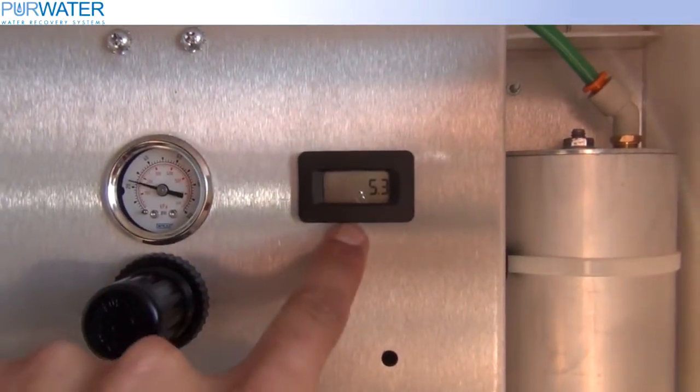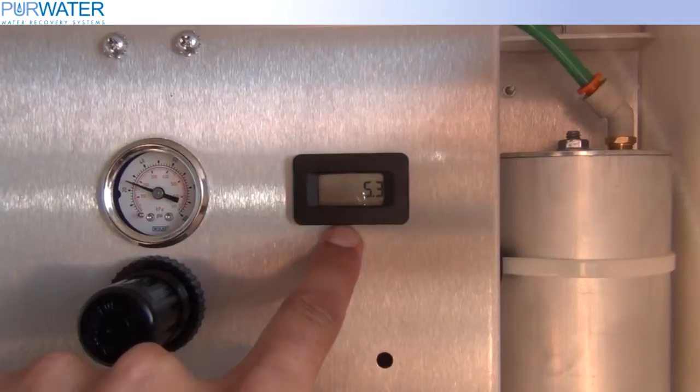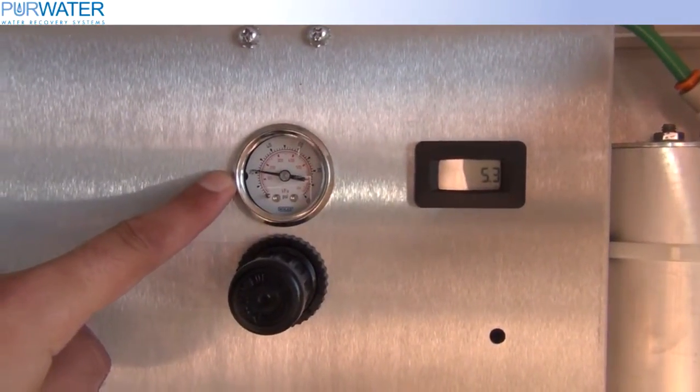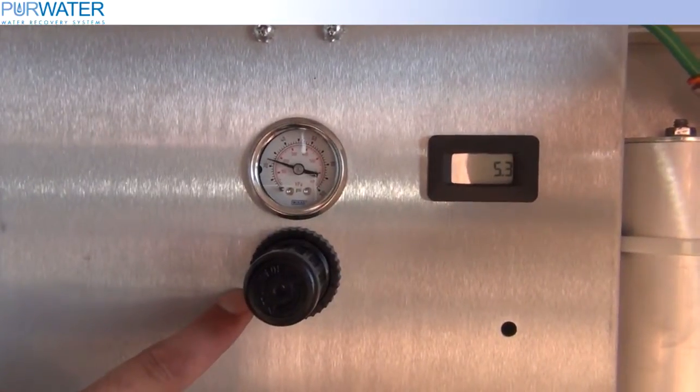Inside the cabinet, there is an hour meter, internal pressure gauge, and a regulator for the outside pressure gauge.